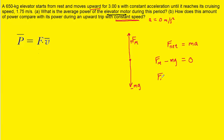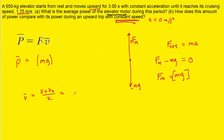Solving for fm with acceleration equal to zero, we simply get fm equals mg. That's the force the motor exerts in part B. For the average velocity, since the elevator moves at constant speed of 1.75 m/s, both the final and initial velocities are 1.75 m/s, so the average velocity is simply 1.75 meters per second.